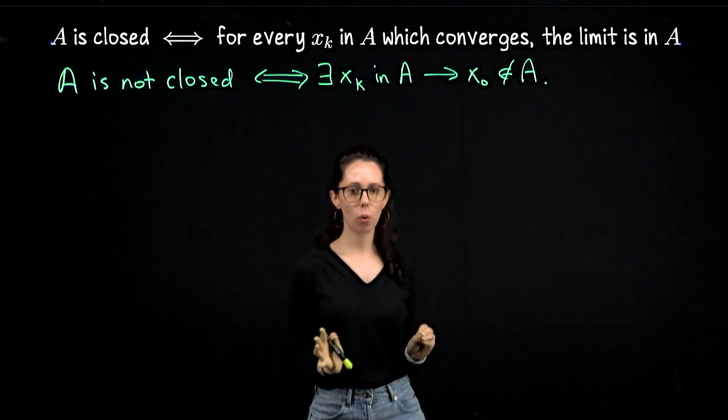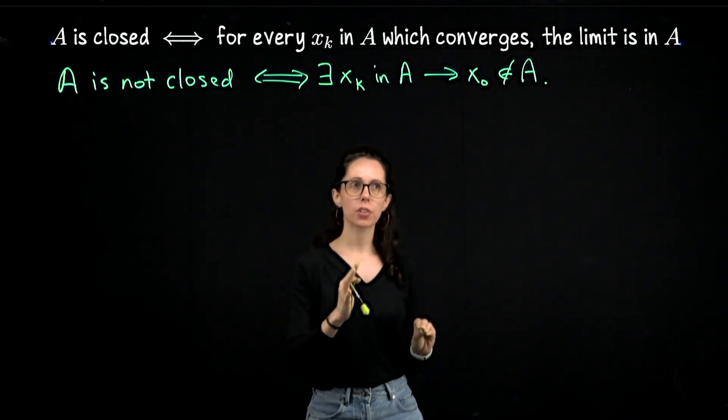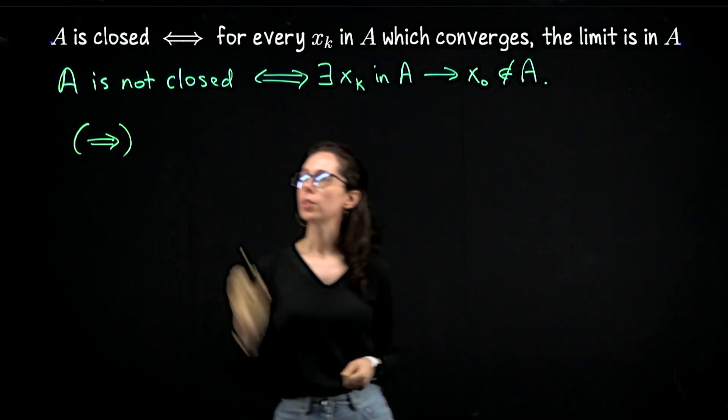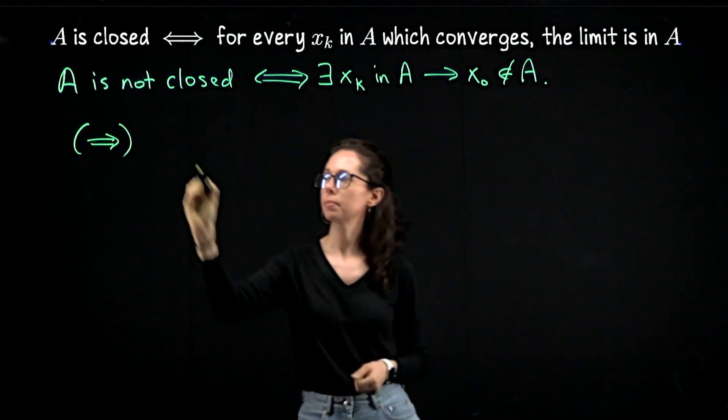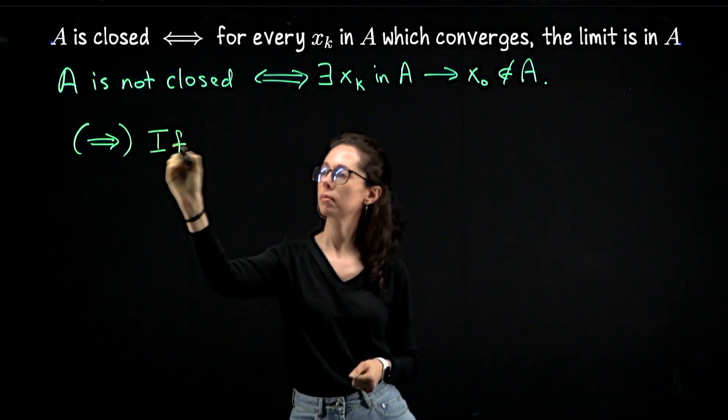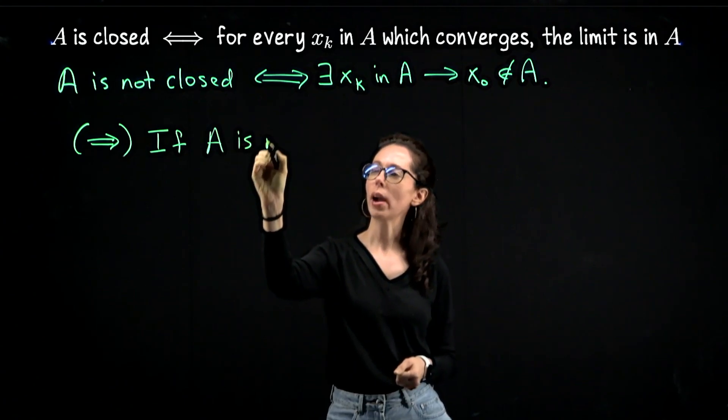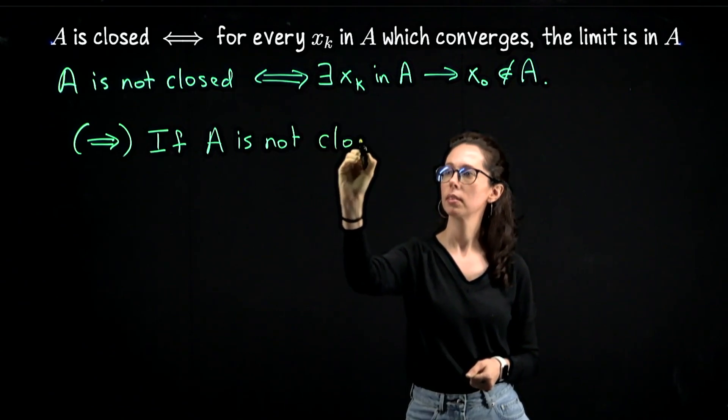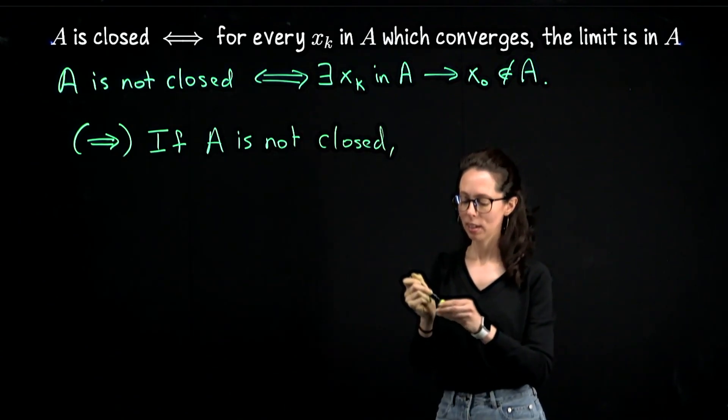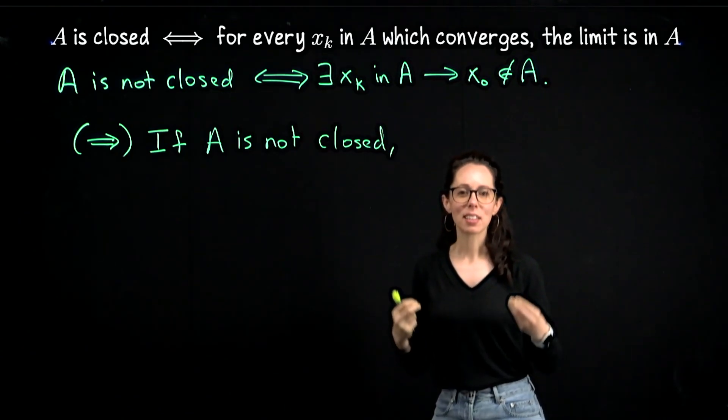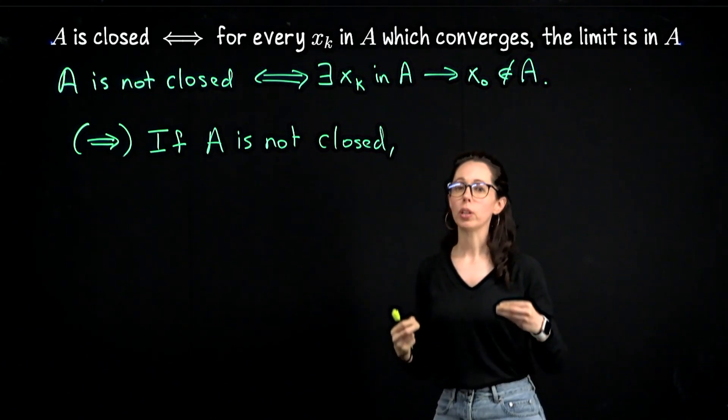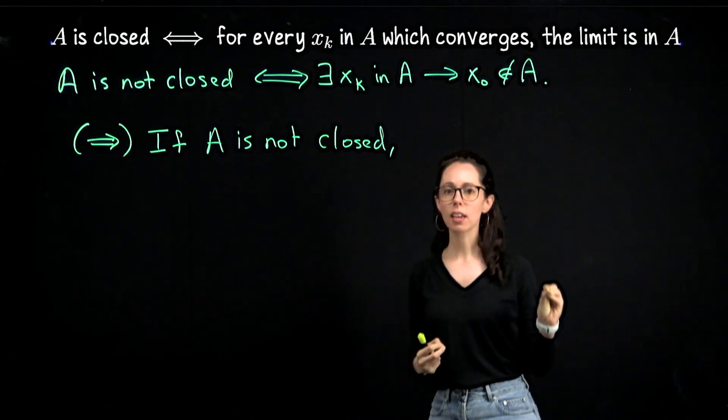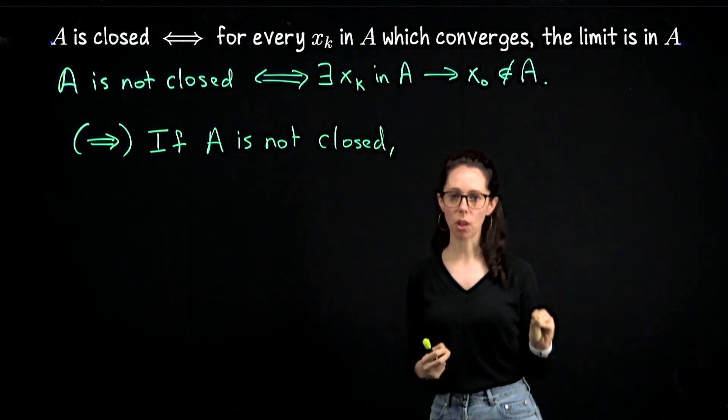I'm going to prove each direction one at a time because for the forwards direction, what I'm going to do is construct a sequence. So assume that A is not closed. And right away, you'll see my motivation for switching to this version of the statement. There's a nice result that you immediately get when you know that you're working with a set which is not closed, and that is the existence of an accumulation point that does not belong to the set.